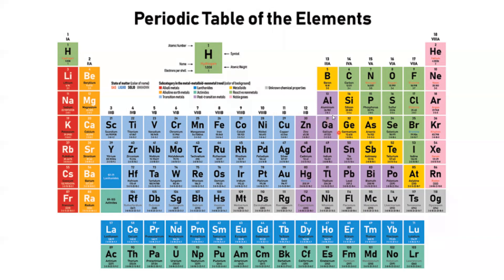He also did the same thing with gallium — he saw a missing spot in the periodic table, and from what he knew about aluminum, he was able to predict how that substance would behave.